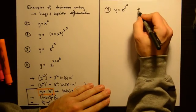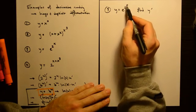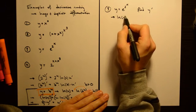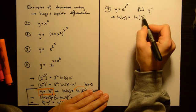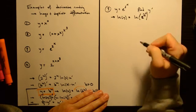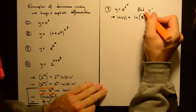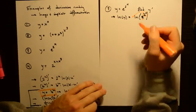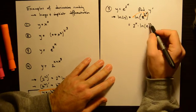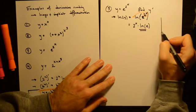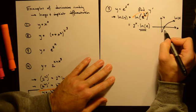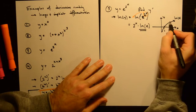In the next problem we differentiate the unusual function y equals e to the (2 to the x). We start the same way by taking the natural log on both sides: ln(y) equals ln(e to the (2 to the x)). Using the exponent rule, bring 2 to the x down in front: ln(y) equals 2 to the x times the natural log of e. Since the natural log of e equals 1, this simplifies to ln(y) equals 2 to the x.